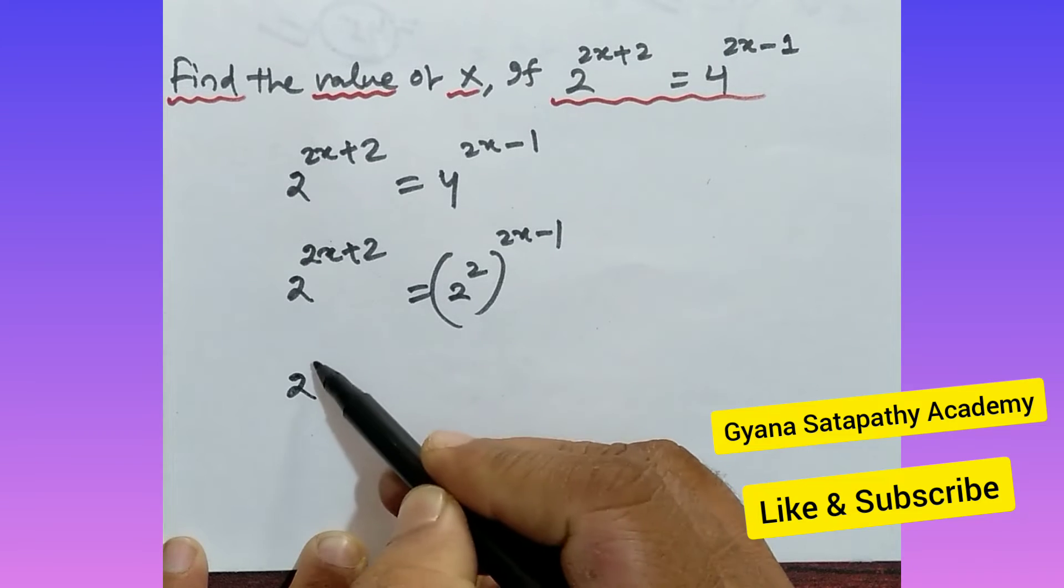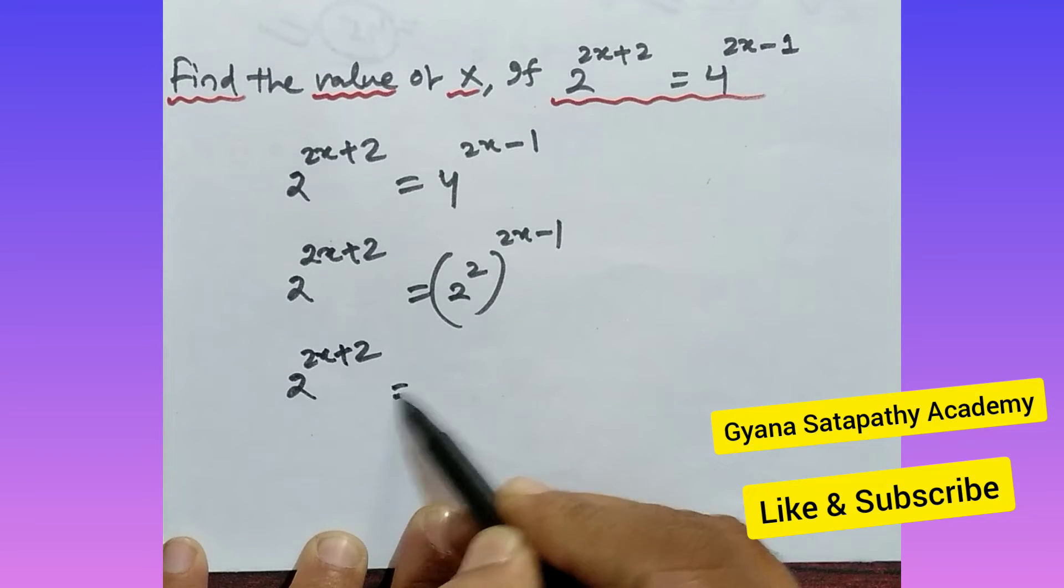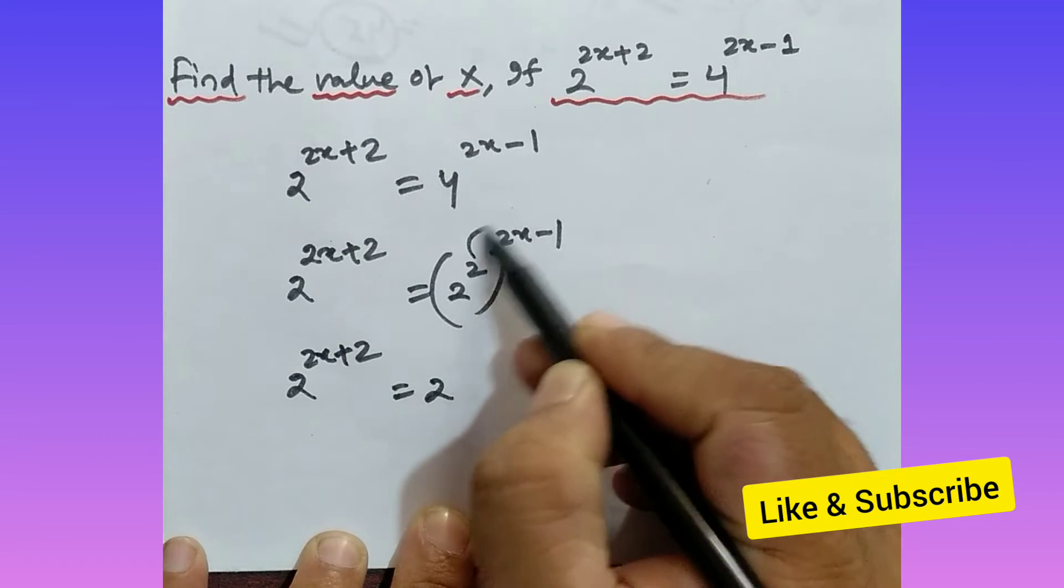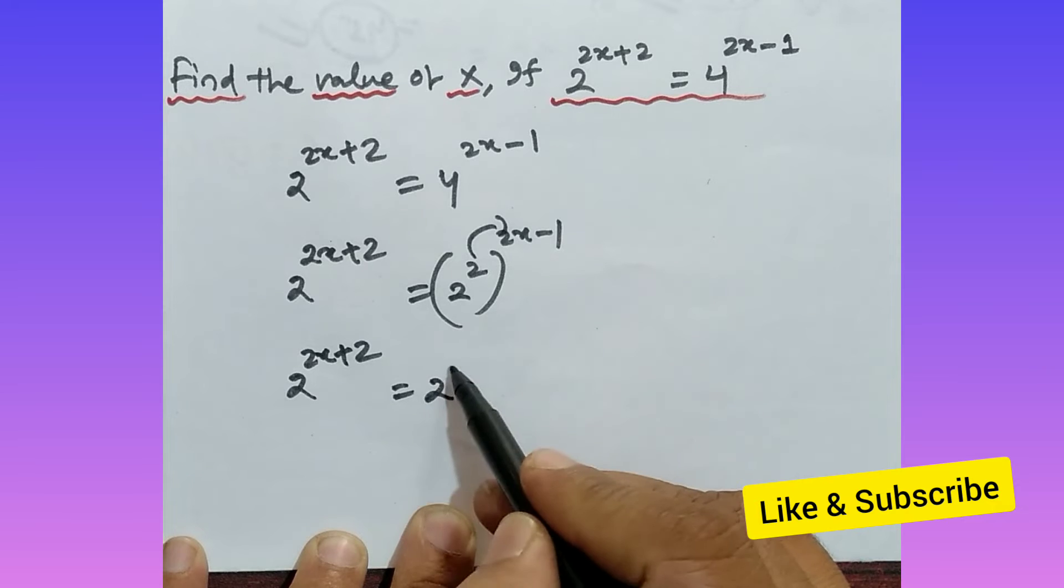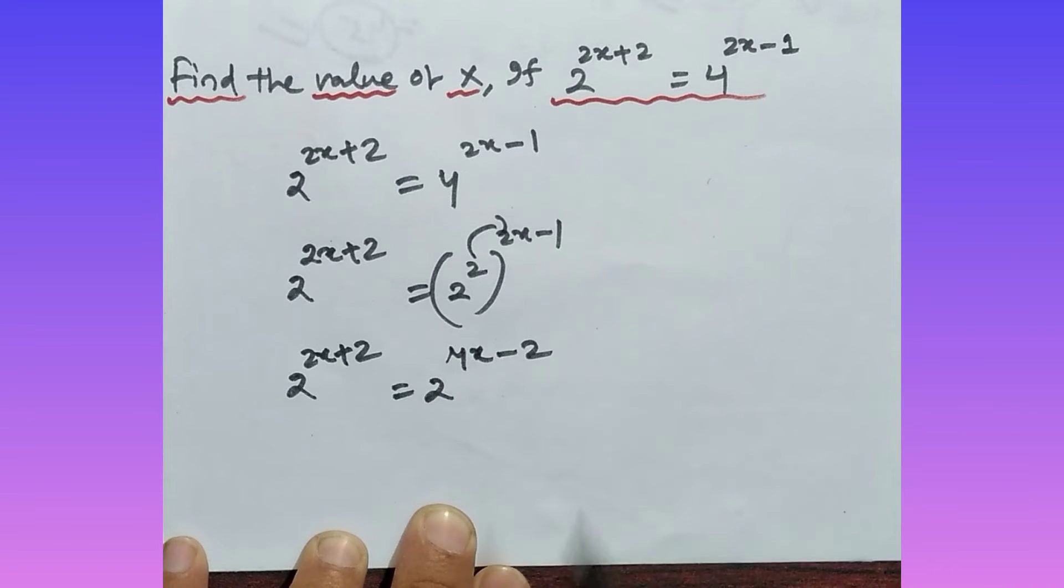So what you have to write? You have to write 2 to the power 2x plus 2 is equal to, this to this you have to multiply, so it will be what? 2 to the, what is that, 4x, it should be what, 4x minus 2, right.